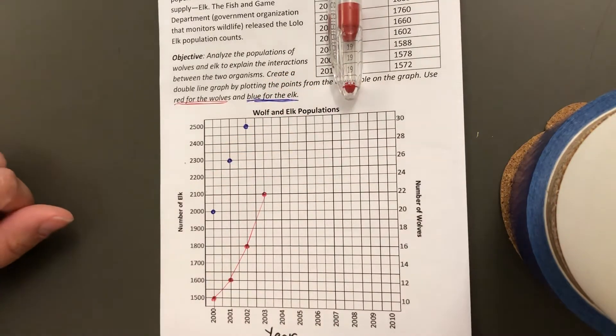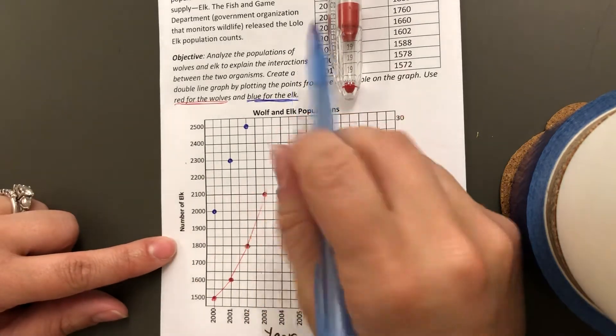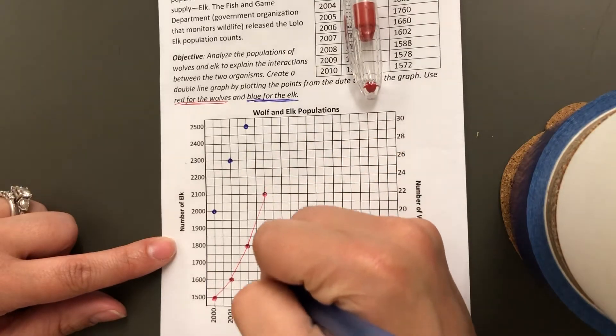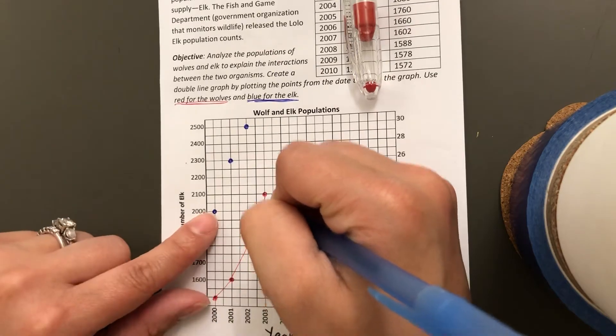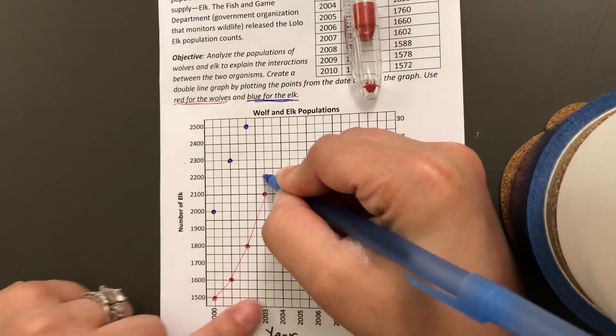Again, I'm going to do that for all of my points. Let's do one more—2003. 2003 was 2,210, so there is not a 2,210, so I'm just going to go maybe right above where the dot would be just to show that it's not quite 2,200.